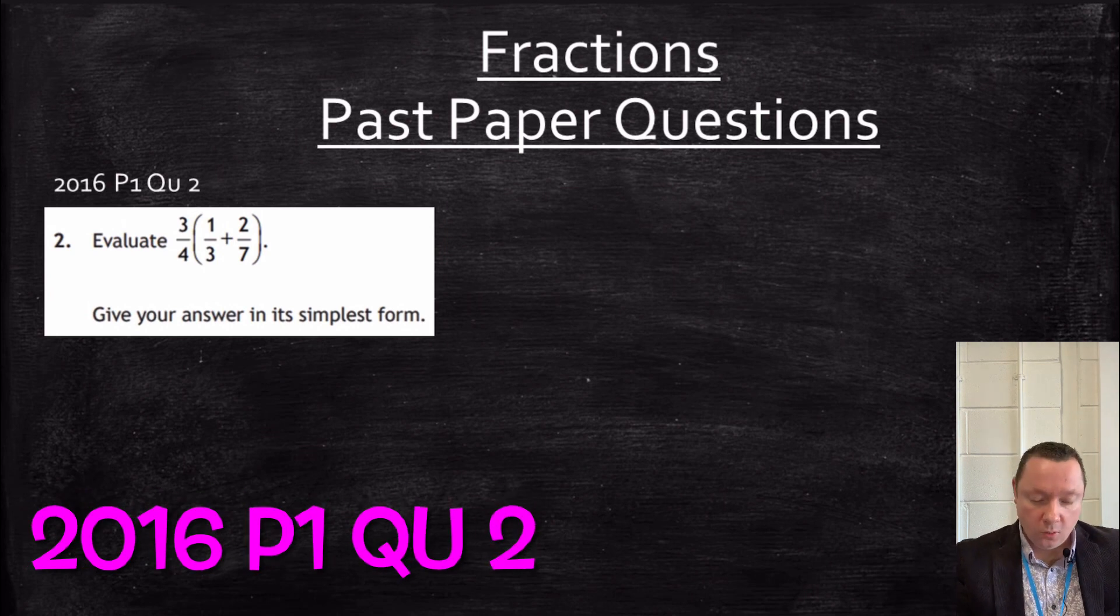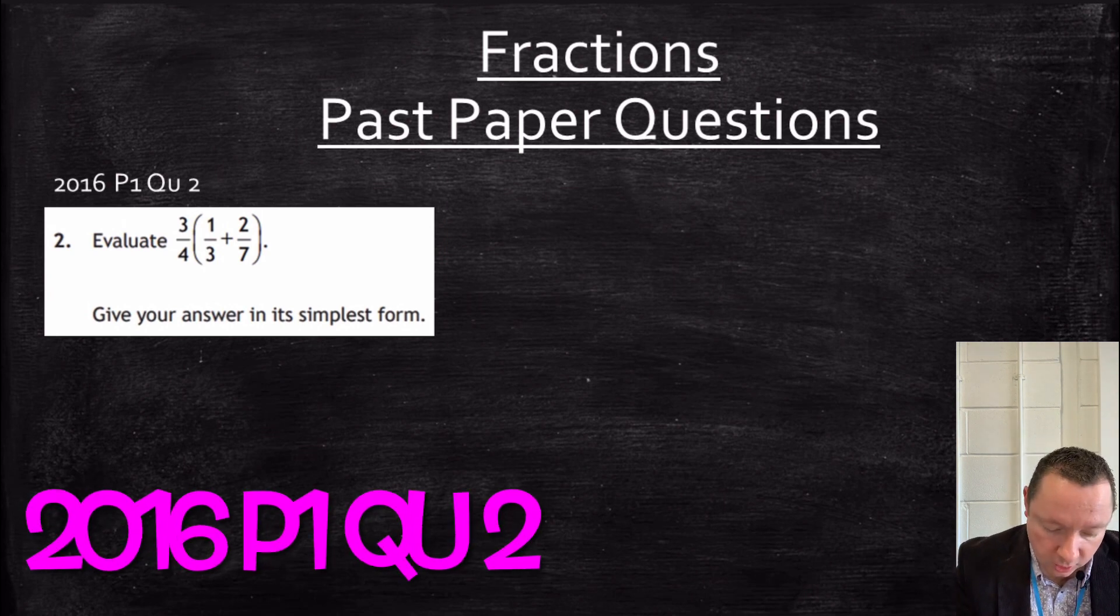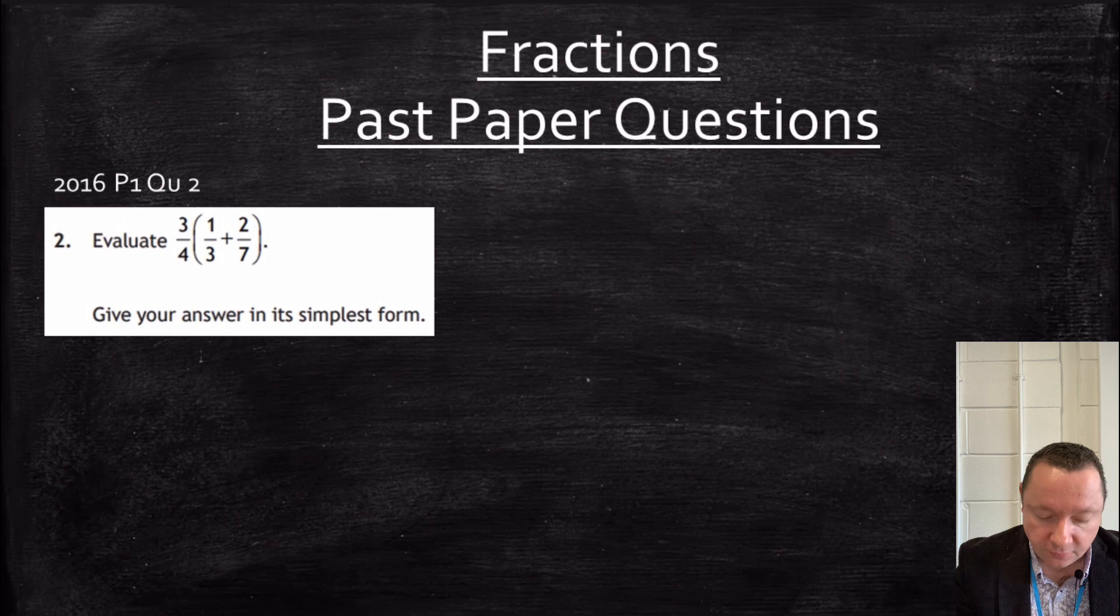Okay, 2016, paper 1, question 2. Three quarters, brackets, a third plus two sevenths. So BIDMAS gets involved here. I do the bits inside the brackets first, then I times the bit outside. So the first thing I'm going to do is a third.